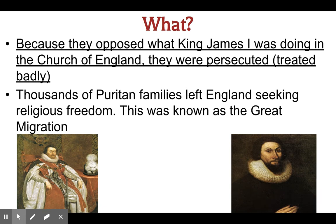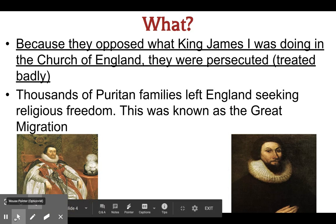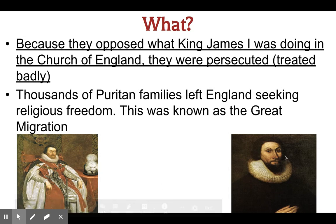They were opposed to what King James I was doing with the Church of England and were persecuted because of it. They had different religious ideas and thought some things in the church should change. The king was upset about this, so they were persecuted, leading thousands of Puritan families to leave England seeking religious freedom in the New World. This became known as the Great Migration.